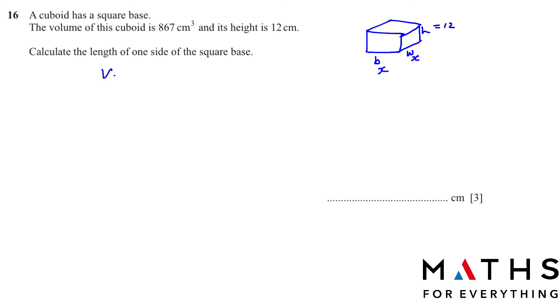The formula to find the volume is length times base times height. Length and width is the same thing. So now we are going to replace here: volume, which is 867, equals x multiplied by x times the height, which is 12. Divide 867 by 12, and x multiplied by x is x square. Let's see what we get: 867 divided by 12 is 72.25.